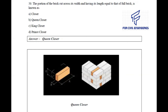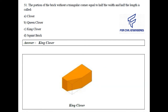Question number 50: The portion of the brick cut across its width and having its length equal to that of a full brick is known as — closure, queen closure, king closure, or prince closure? The right answer is queen closure. When a brick is cut into two halves longitudinally, one part is called queen closure. Question number 51: The portion of the brick without a triangular corner equal to half the width and half the length is called — closure, queen closure, king closure, or squint brick? The right answer is queen closure, as you can see in the image.